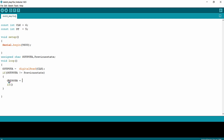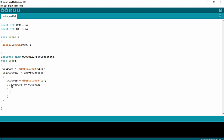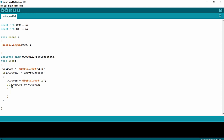When outputB is not equal to outputA, from the previous video we learned that when outputA is not equal to outputB it means the shaft has been rotated in the clockwise direction. So if the outputs are different we increment a variable called counter. In the else case, if outputA and outputB have equal values at the same instance of time, that means rotation is in the counter-clockwise direction, so we decrement the counter variable.